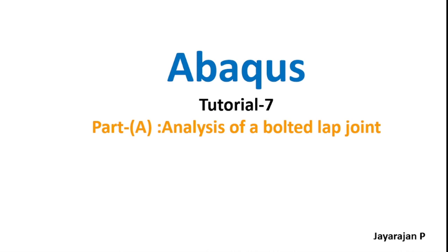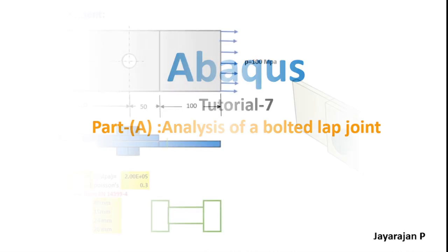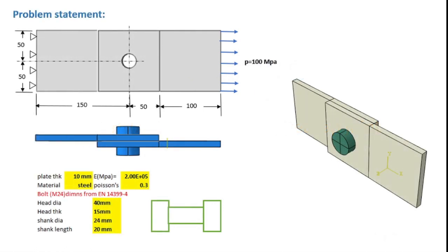Let us first read the problem statement. As shown in the figure, the lap joint essentially consists of two plates, each of a thickness of 10 mm, connected using a single bolt. The bolt is of diameter M24, that is the shank diameter will be 24 mm. Both the plate as well as the bolt are made of steel with an E-value of 2×10⁵ N/mm² and a Poisson's ratio of 0.3.